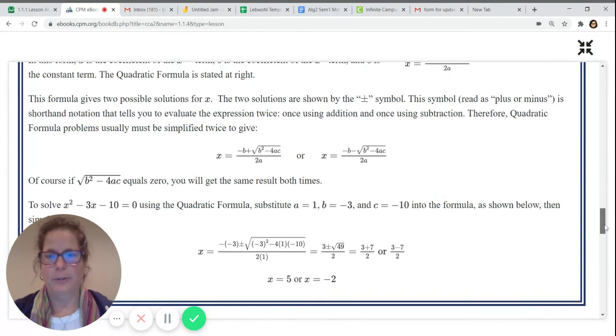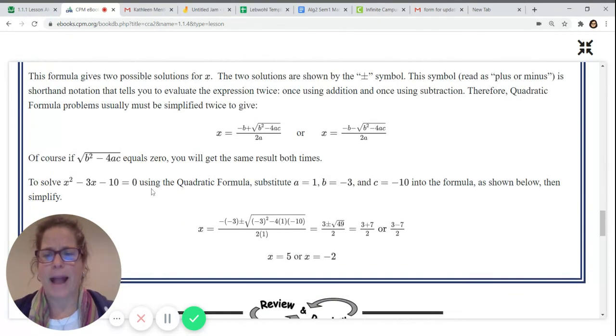x equals 5 or x equals negative 2. And if we plug them back into our original equation, if we plug them in on the left-hand side, we would get 0 equals 0. Now you can always check your answers by plugging back in. I hope that was helpful.